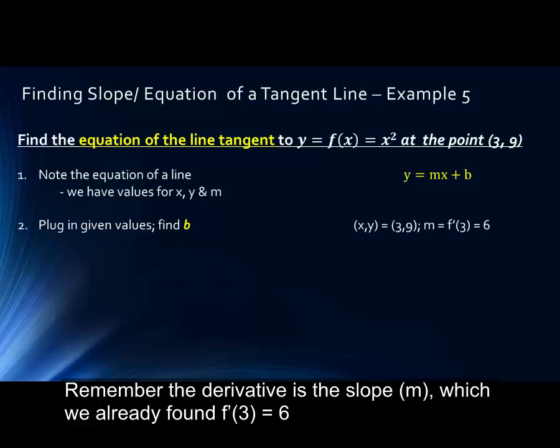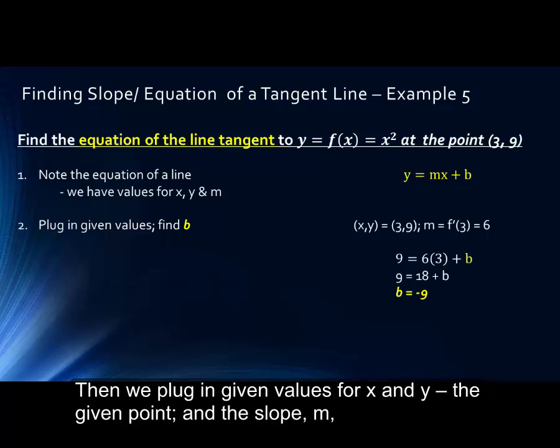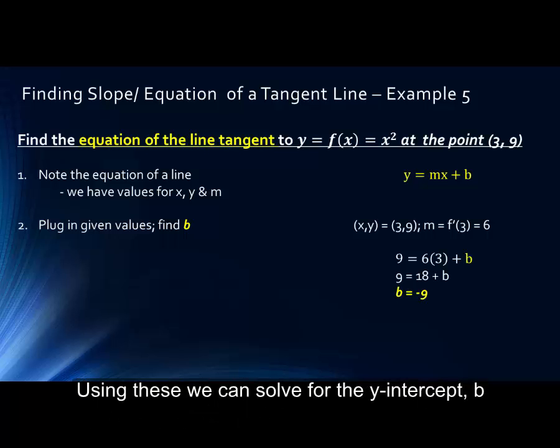Remember the derivative is the slope m, which we have already found from the prior example. f prime 3 equals 6, or the derivative at f of x at 3 is equal to 6. Then we can plug in given values for x and y, which was the given point in the original problem, and the slope m. Using these, we can then solve for the y-intercept b.